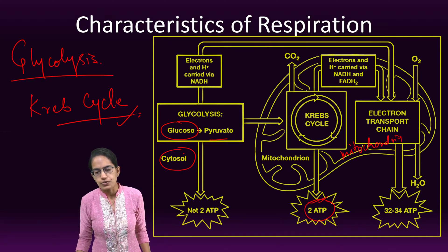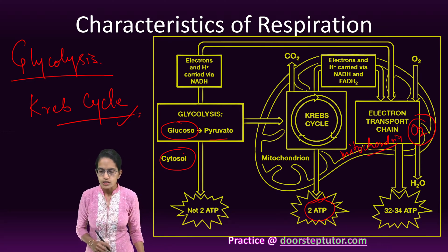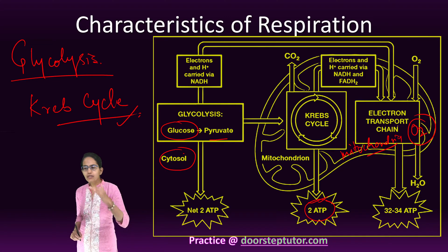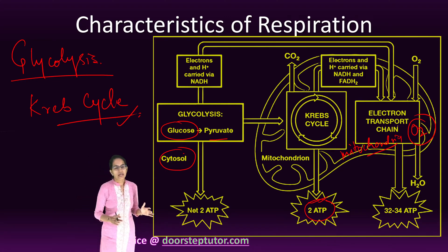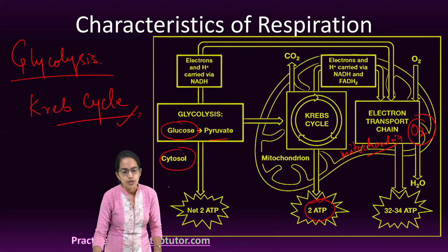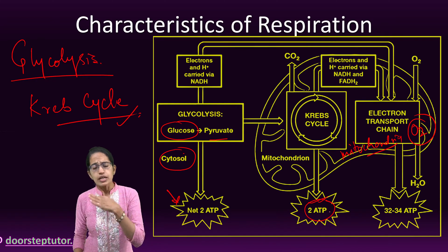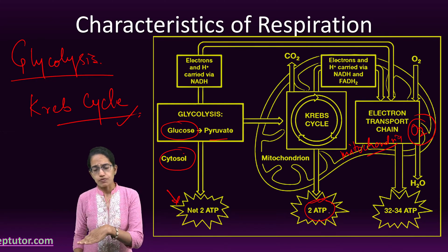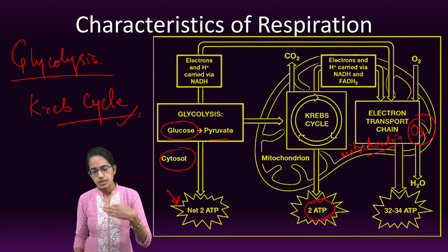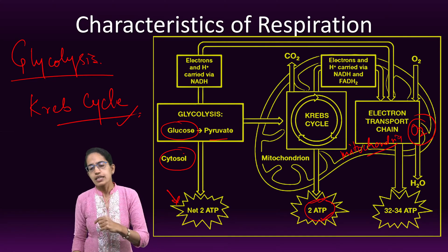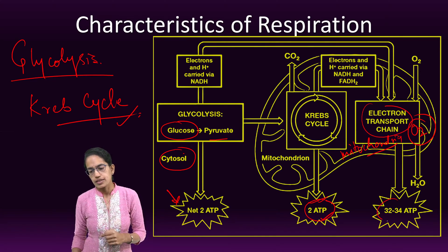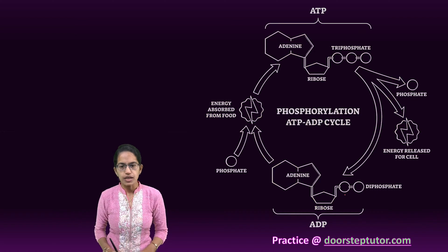Since the Krebs cycle occurs in mitochondria, it is a process which requires oxygen. In the process of glycolysis, net two ATPs are produced. In the process of Krebs cycle, two ATPs are released directly, and then there is an electron transport chain that releases 32 to 34 ATP again.